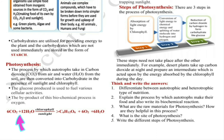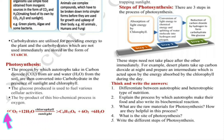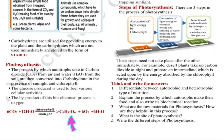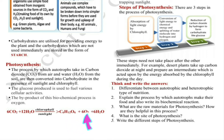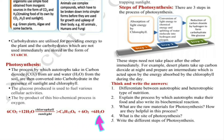The balanced chemical equation for photosynthesis is: 6CO2 + 12H2O → C6H12O6 + 6O2 + 6H2O, in the presence of sunlight and chlorophyll. We need 6 molecules of CO2 and 12 molecules of water to get 1 molecule of glucose, and the by-products are 6 molecules of oxygen and water.